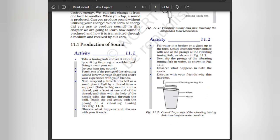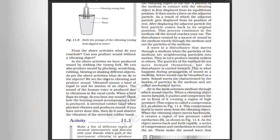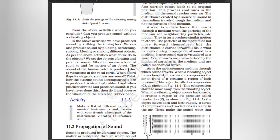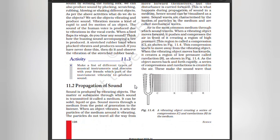From the above activities, what do you conclude? Can you produce sound without a vibrating object? We have produced sound by striking the tuning fork. We can also produce sound by plucking, scratching, rubbing, blowing, or shaking different objects. We set the objects vibrating and produce sound. Vibrating means a kind of rapid to-and-fro motion of an object. Sound of a human voice is produced due to vibrations in the vocal cords. A stretched rubber band, when plucked, vibrates and produces sound.